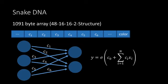Additionally, another byte is stored for the color of the snake to spot inheritance easily. In total, for snakes with the 48-16-16-2 network structure, the DNA strand is a 1091-byte long array.